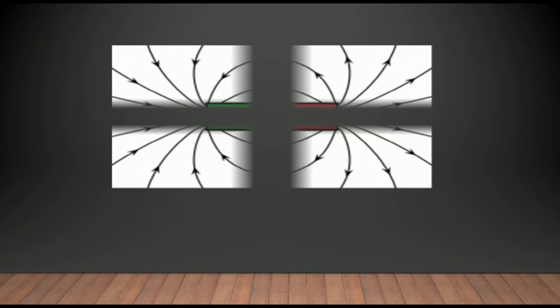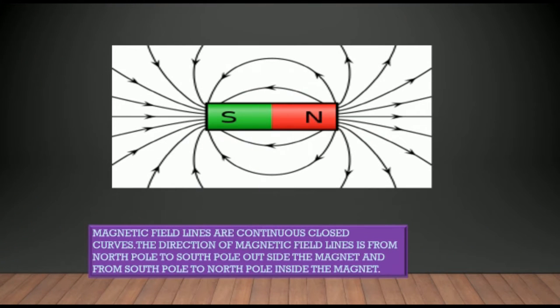Magnetic field lines are continuous curves. Their direction is from North Pole to South Pole outside the magnet and from South Pole to North Pole inside the magnet.